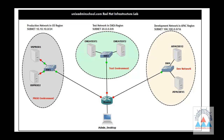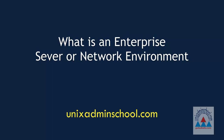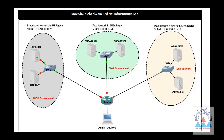As the name implies, the Red Hat Enterprise Linux 7 operating system is designed to work in an enterprise level server environment. The networking infrastructure in a large enterprise environment is usually configured with several thousands of computer systems placed in multiple network segments with strict access control mechanisms implemented. The installation, configuration, and management of Linux infrastructure is much more different than how we do it in a basic network setup.